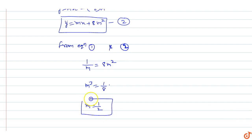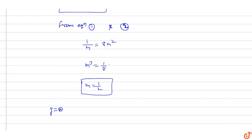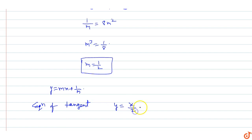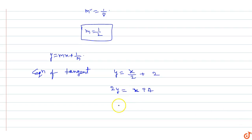Substituting m = 1/2 into equation one: y = (1/2)x + 1/(1/2) = x/2 + 2. Multiplying through by 2: 2y = x + 4, which gives the equation of the common tangent as y = x/2 + 2, or equivalently x - 2y + 4 = 0.